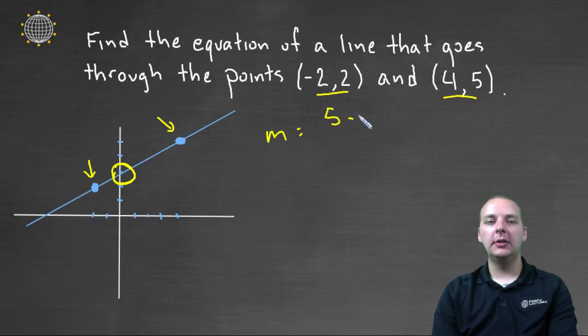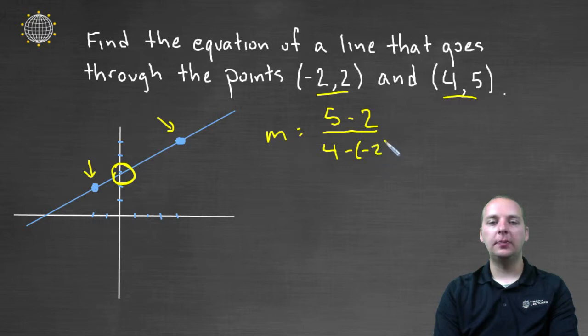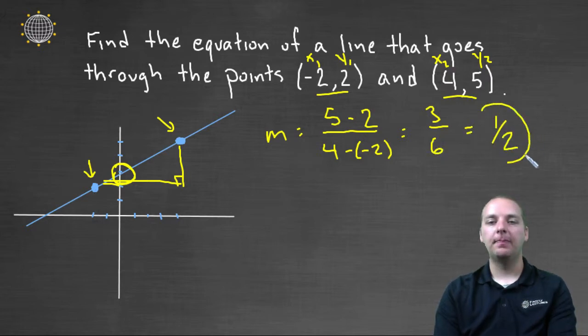It's y two minus y one, which is five minus two, divided by x two minus x one. And where I'm getting that from is, if this is my first point I'm going to call this x one y one, because it's the first x y point. And this x two y two, because it's the second x y point. So y two minus y one, divided by x two minus x one. That gives you the rise over the run. Five minus two is three. Four minus negative two is four plus two, which is six. So this line has a slope of a half. Okay, so let's keep that in mind.